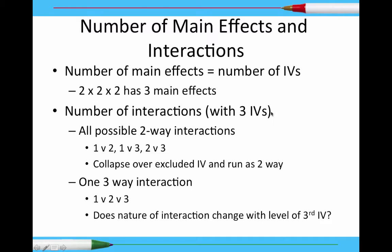The number of interactions will climb very steeply every time you add another independent variable. With three independent variables, you're going to have all the possible two-way interactions: one versus two, one versus three, two versus three — that's three. And then there's a three-way interaction: one versus two versus three. So with three independent variables you have four possible interactions total. With two independent variables you just have one possible interaction. Add another IV and you'd have a whole lot more.